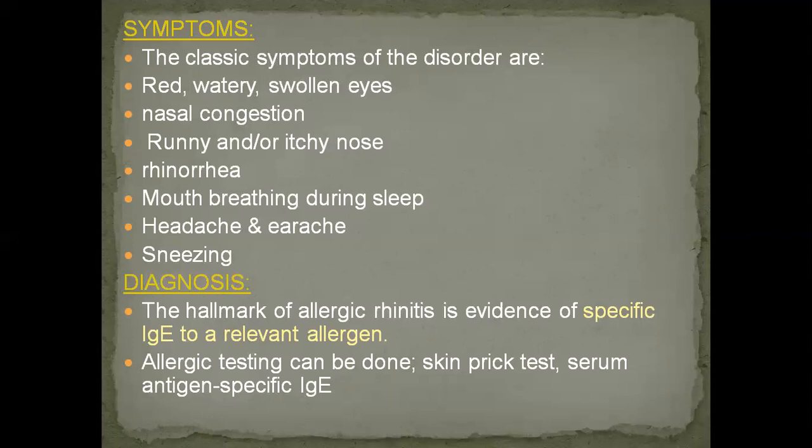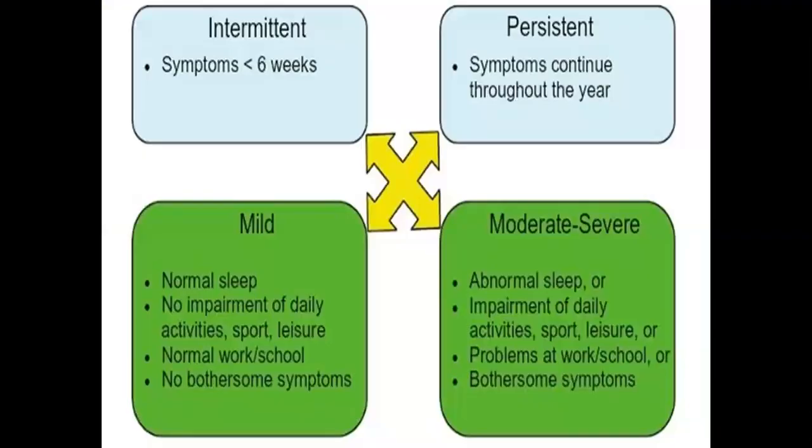Diagnosis can be done by allergy testing through the skin prick test and serum antigen-specific IgE. We use serum antigen-specific IgE because it is the hallmark of allergic rhinitis and serves as evidence of specific IgE to a relevant allergen. In allergic rhinitis, numerous inflammatory cells — mast cells, CD4-positive T cells, B cells, macrophages, and eosinophils — infiltrate the nasal lining upon exposure to allergen and release cytokines that promote immunoglobulin E production.